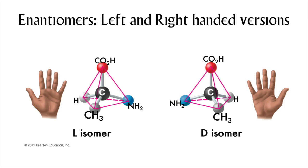Enantiomers are carbon atoms with four different substitutions. One of them might be hydrogen, but not two. If there are four different substitutions, a strange thing happens, which is that you may get left- and right-handed versions of the same molecule.